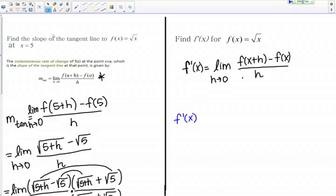F prime of x is going to be the limit as h goes to 0 of the square root of x plus h. F of x plus h means I just take x plus h and plug it in for x in my function. I get the square root of x plus h minus f of x, which is the square root of x all over h.